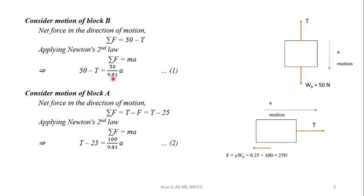Equation number 1 and 2. T and A are unknown values. By simultaneous solution, we can find out tension in the cable T and acceleration of masses A. Add the equations to eliminate T. 1 plus 2 gives 50 minus 25 equals A into 9.81 into (50 plus 100). We can get acceleration A to be 1.635 meter per second square.